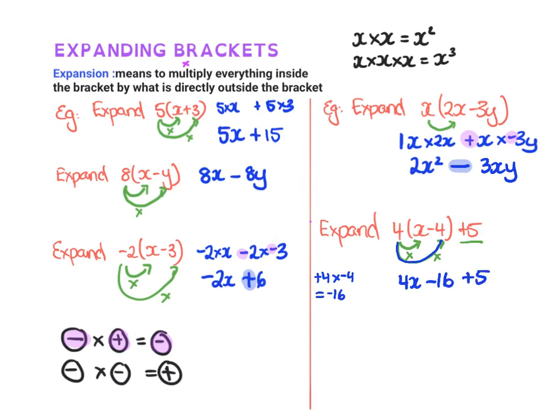Once you've done that, we've expanded that. We like to group like terms. So if we had like terms, we'll group them. So here, these numbers are like terms. So we can do that. So we've got negative 16 plus 5 would give me negative 11. So therefore, that's my final answer for that one.